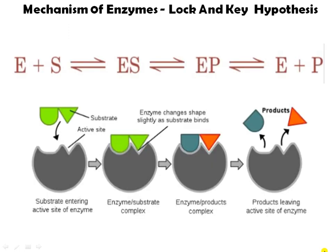This is the lock and key model of enzyme action. The substrate enters at the active site, then the enzyme changes shape slightly as the substrate binds. The substrate then gets converted into the product, and the product is released from the enzyme. This is the general mechanism of action of the enzyme.